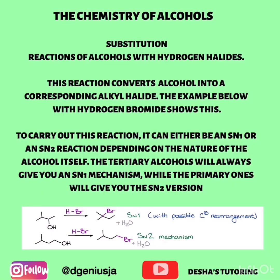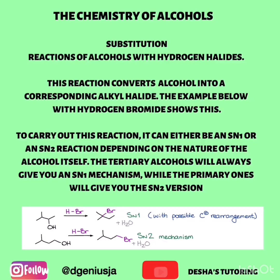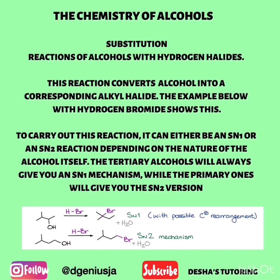Alcohols undergo substitution. For example, the reaction of alcohols with hydrogen halides converts the alcohol into a corresponding alkyl halide. To carry out this reaction, it can either be an SN1 or SN2 reaction, depending on the nature of the alcohol. Tertiary alcohols will always give you an SN1 mechanism, while primary alcohols will give you the SN2 version.